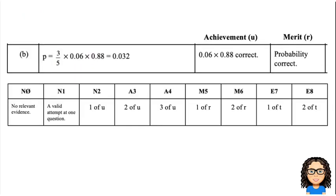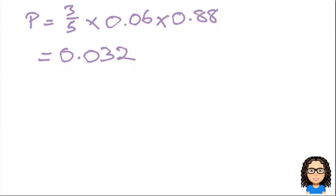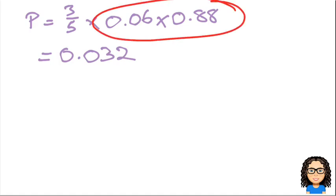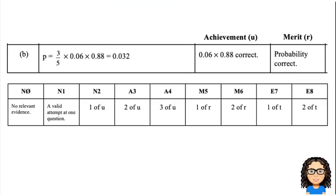So in terms of marking: if you got part of it — so if you didn't know what to do with the fraction 3 fifths but managed to do that part of the calculation correctly — that gets you a u. And if you get the whole answer correct, that gets you an r towards your merit. Working through the mark scheme: 1u is N2, 2u is A3, 3u is A4, 1r is M5, 2r is M6, 1t is E7, and 2t's is E8. Work that out and that will give you a mark for question 2.